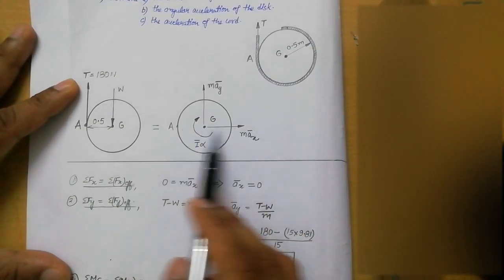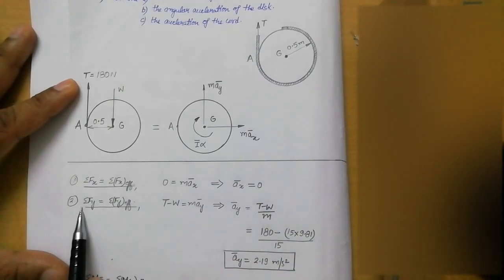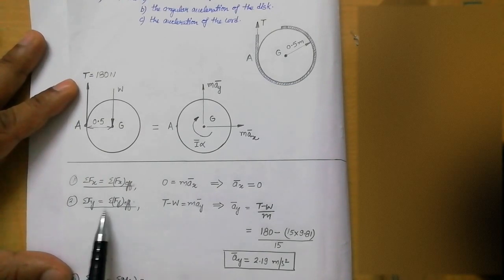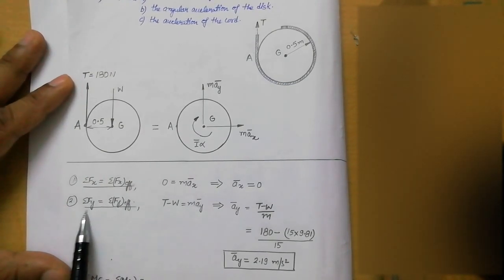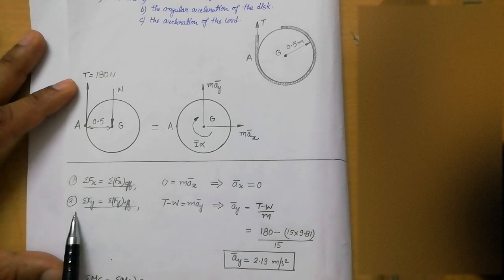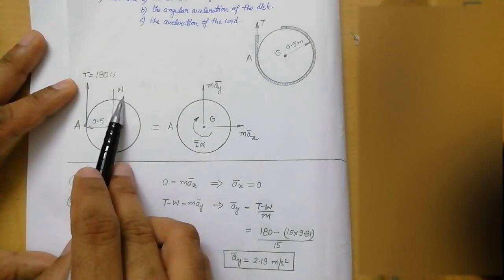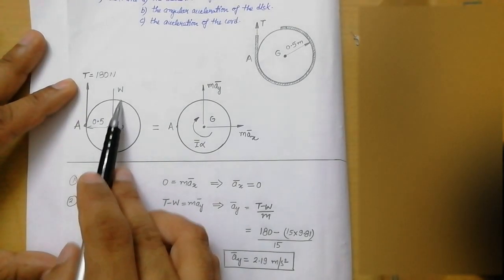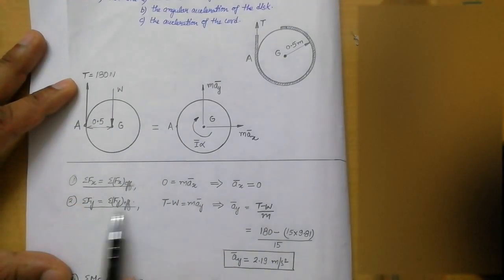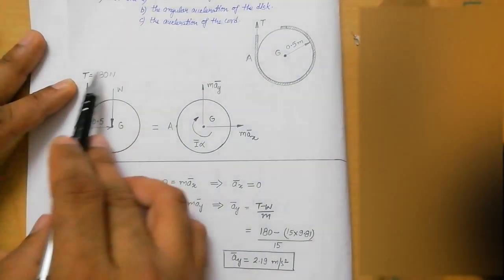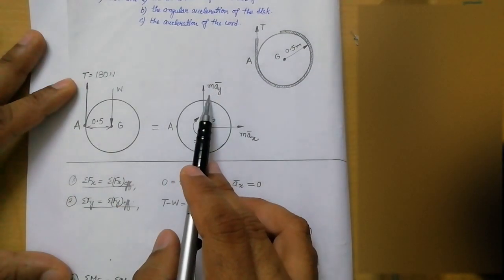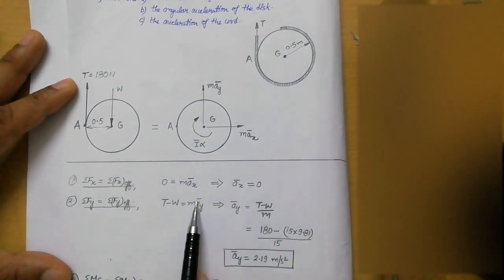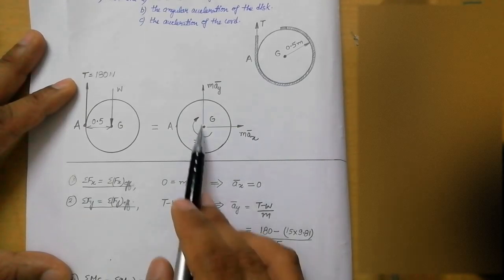Now let us apply the second equation: summation Fy equals summation Fy effective. The y-direction forces are T and W. T is acting upward — take that as positive — and W is acting downward — that is negative. So we write T minus W equals m·ay, where ay is the acceleration of the disc in the y direction.